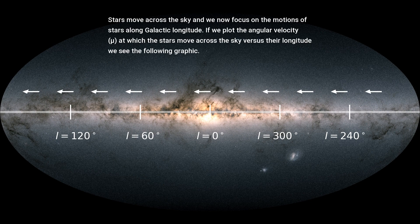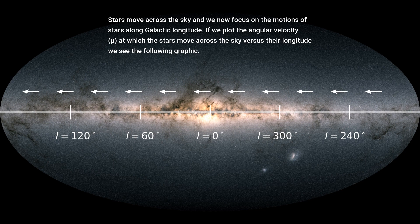Stars move across the sky and we now focus on the motions of stars along galactic longitude. If we plot the angular velocity at which the stars move across the sky versus their longitude, we see the following graphic.